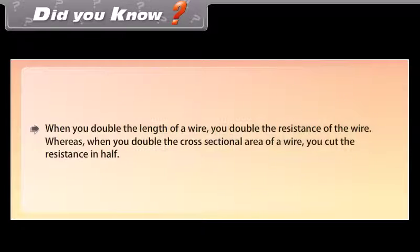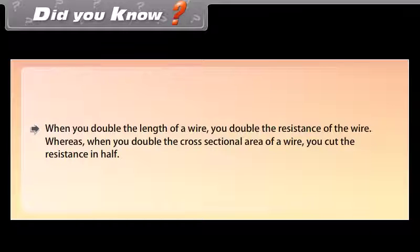Did you know? When you double the length of a wire, you double the resistance of the wire. Whereas when you double the cross-sectional area of a wire, you cut the resistance in half.